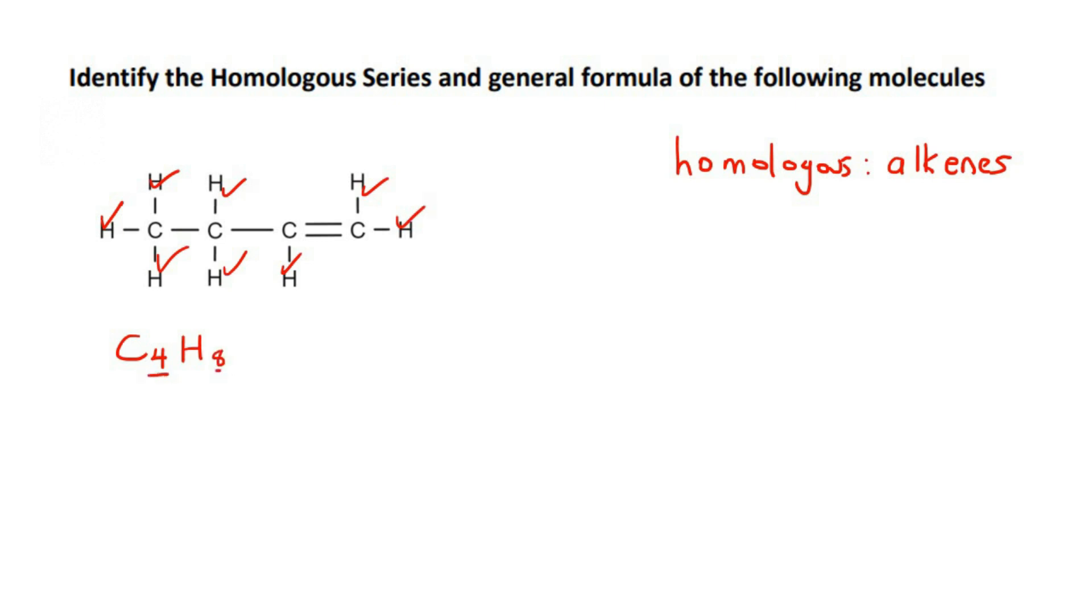So what we can see is that there's a double. So we can say C, N, H. So if C, if there are N carbons, then there would be 2N hydrogens. So your general formula is going to be CnH2n.